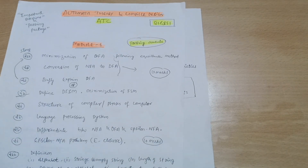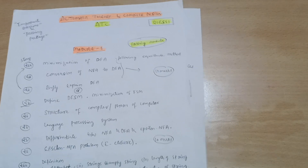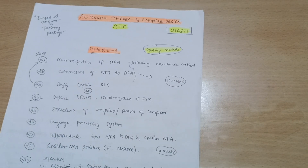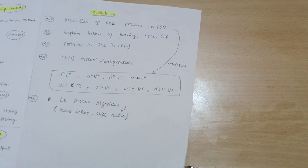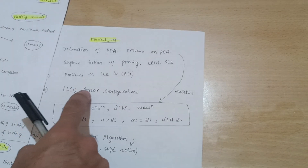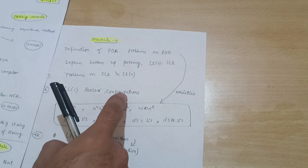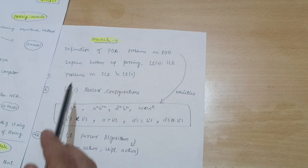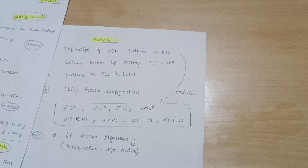For those who just want to pass, the first priority should be Module 1, Module 2, and Module 5. After that, go through the remaining modules where you feel convenient. If you feel comfortable with LL(1) parser configuration problems or SLR problems, go through them accordingly. If you find difficulties in these modules, you can neglect them. That is all about the Automata Theory and Compiler Design passing package.